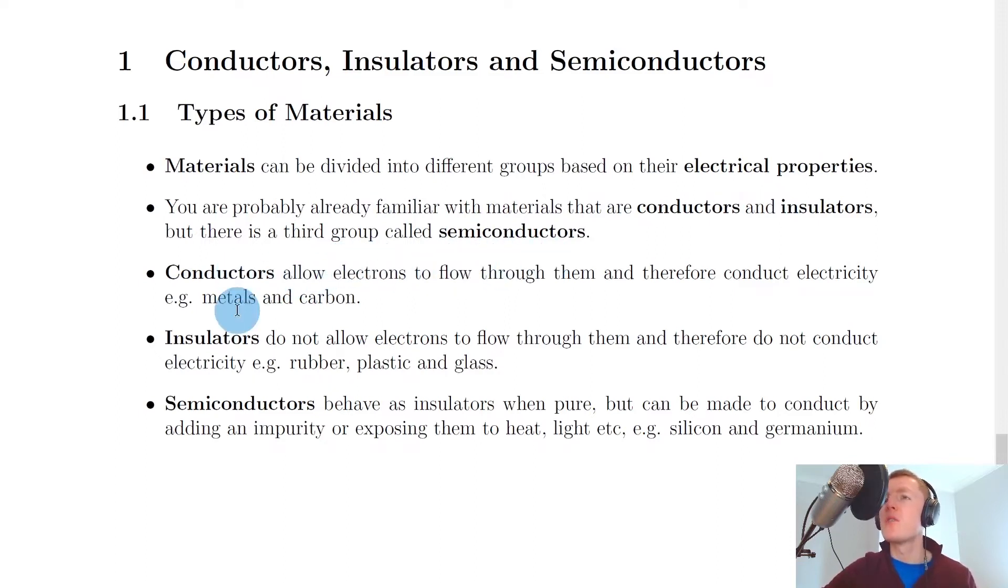Let's just remind ourselves of what conductors and insulators are first of all. So you should already know that conductors allow electrons to flow through them and therefore conduct electricity. For example, metals and carbon are good conductors,